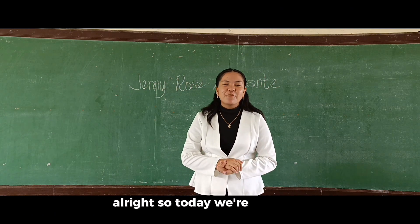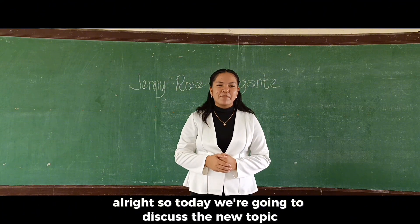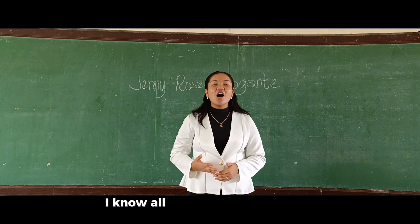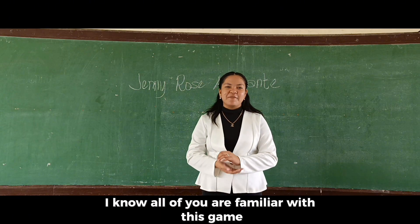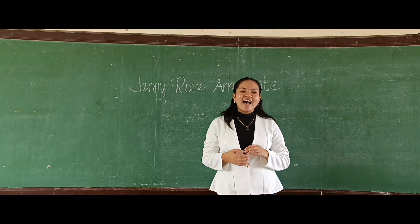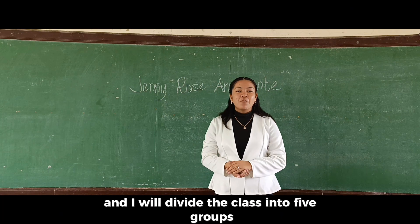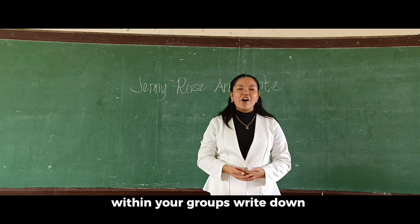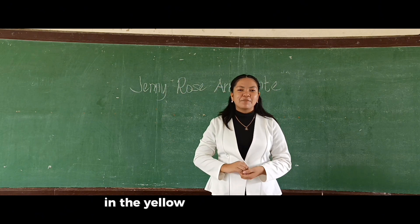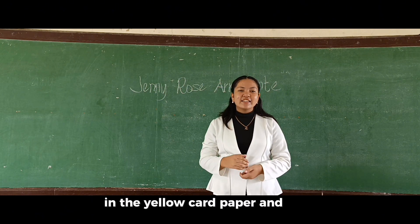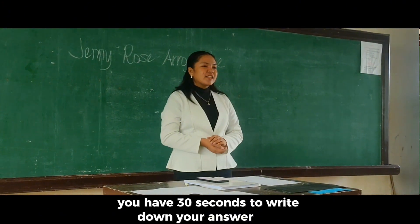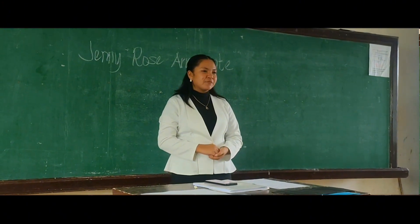So today we're going to discuss a new topic. But before that, let's first play a short game — I know all of you are familiar with this game. This afternoon we will play P2Word, and I will divide the class into five groups. Within your groups, write down the words that you can associate with a picture on the yellow pad paper. For each picture, you will have 30 seconds to write down your answer.